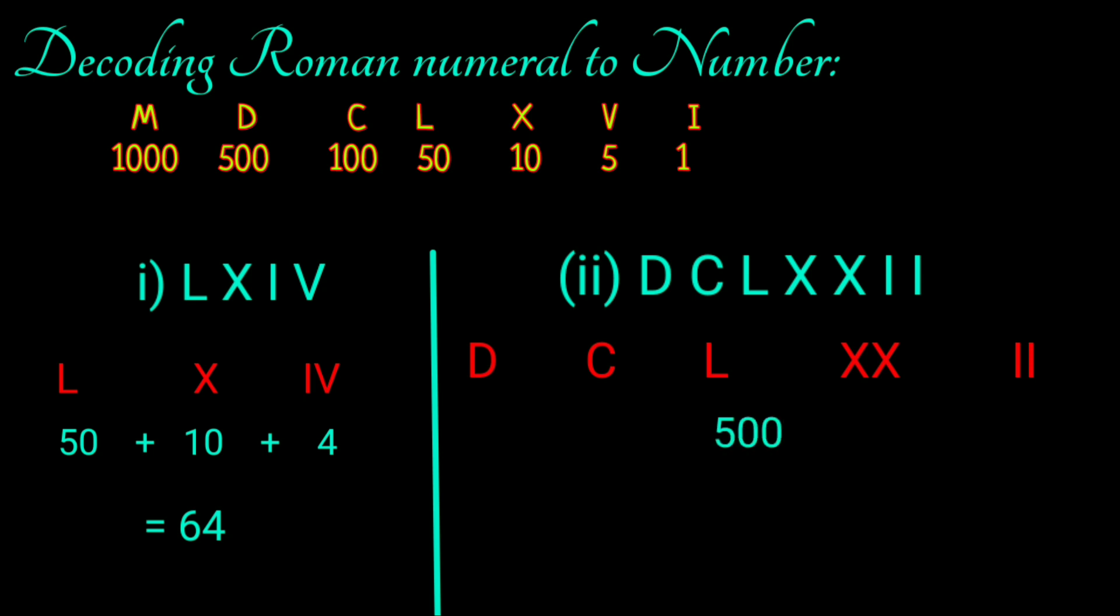D represents 500, C as 100, L 50, XX as 20, II as 2. While adding this value, we have 672.